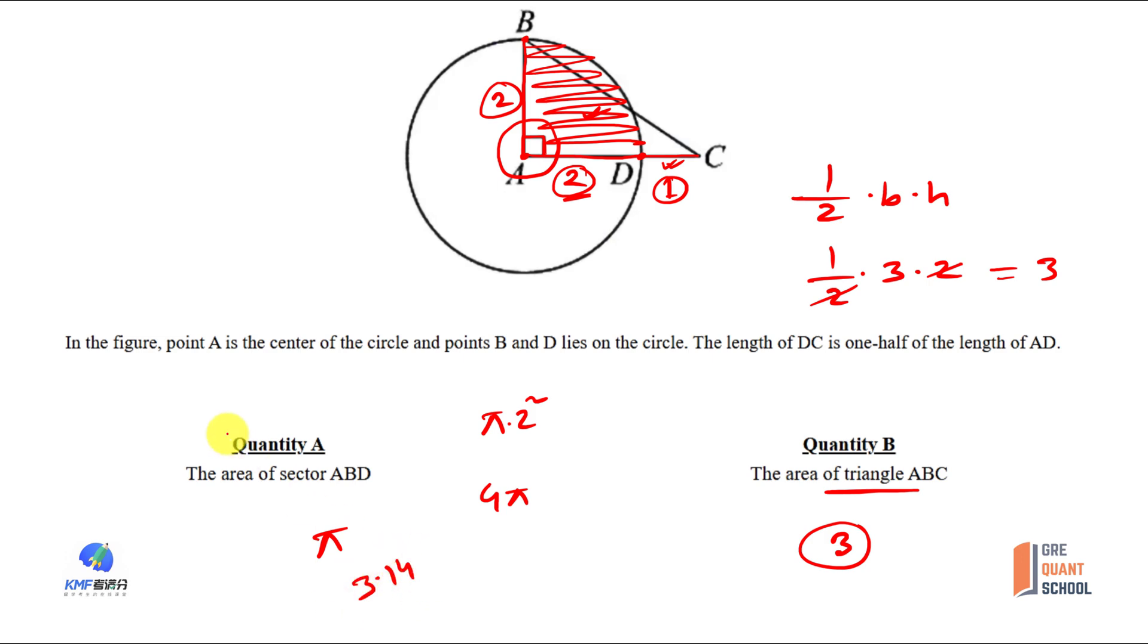Looking at the formula, the sector area formula. The total angle is 360 degrees, the central angle is greater than 90.